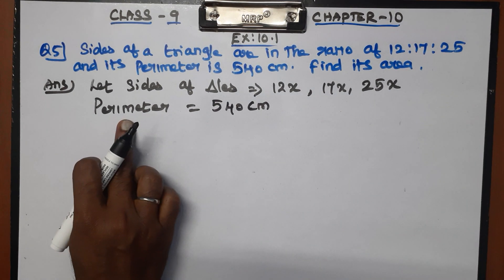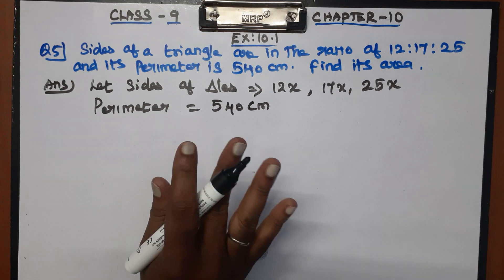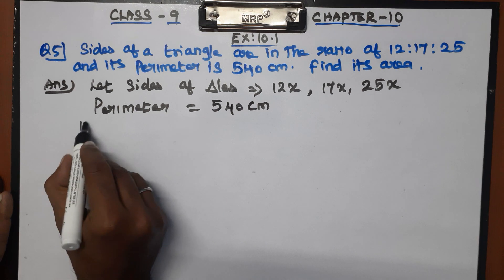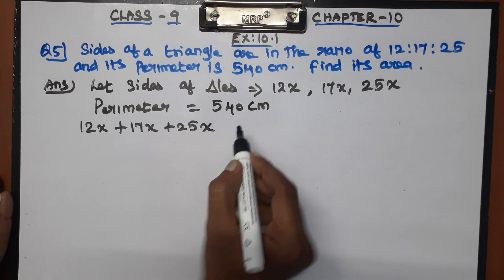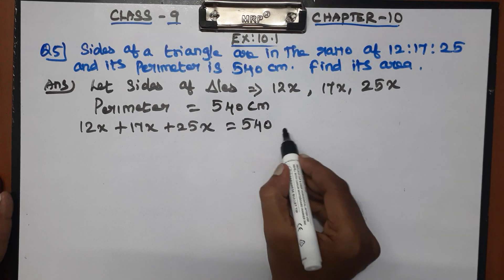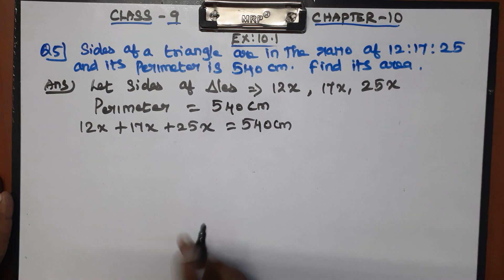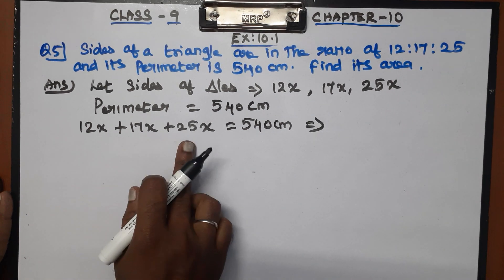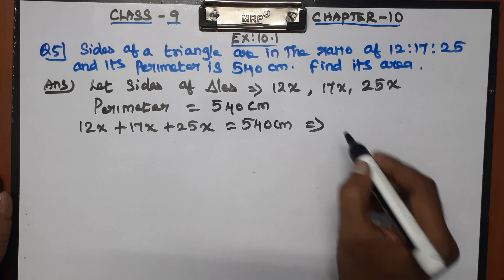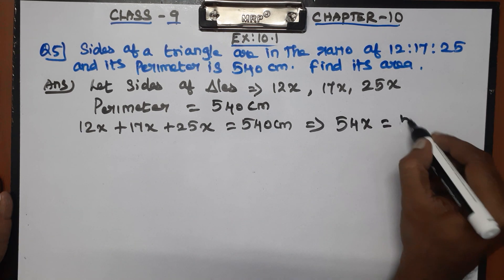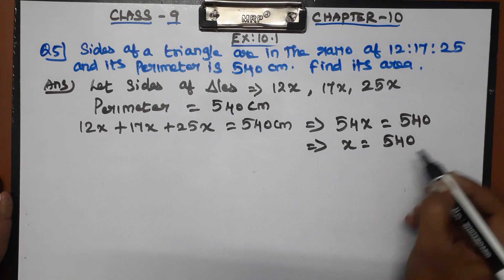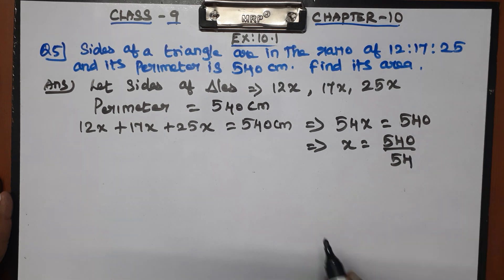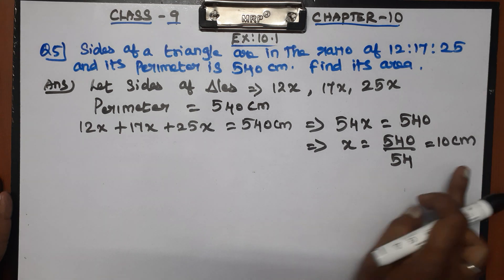The perimeter equals 540 cm. Adding the coefficients: 12 plus 17 plus 25 is 54, so 54x is equal to 540. Therefore x is equal to 540 divided by 54, which gives x equal to 10 cm.